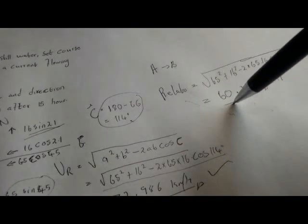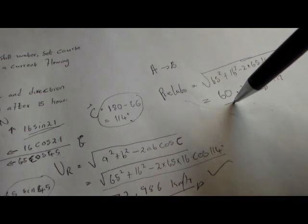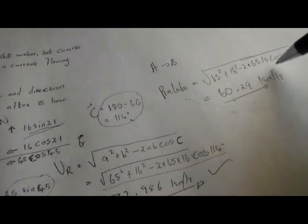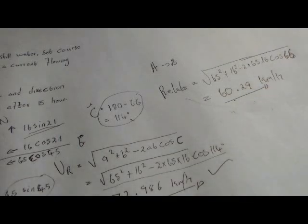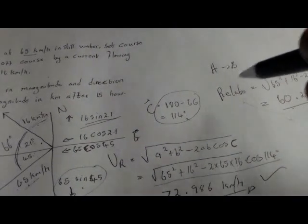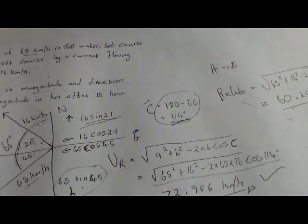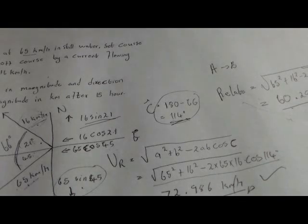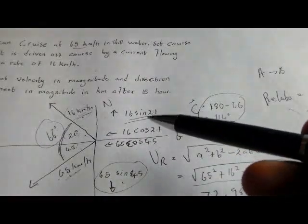So if you are calculating a relative velocity — for example, the relative velocity of the ship with body A or body B — the angle used is 66 as it is. But if you are calculating the resultant velocity, we use 180 minus 66 to get 114 degrees. This is the reason we use the angle as it is for relative velocity: we are just calculating the relationship between these two vectors.